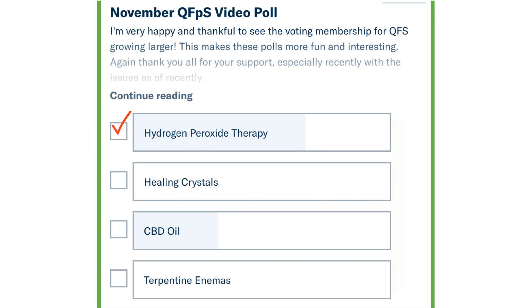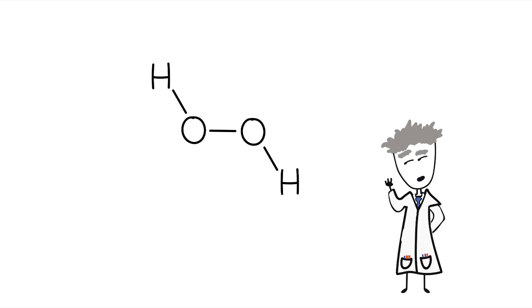This video was voted for by patrons of Questions for Science. Hydrogen peroxide is the simplest peroxide molecule found in nature. It's composed of two oxygen atoms bound to each other, called a peroxide group, and one hydrogen atom bound to both oxygen atoms. So get it? Hydrogen peroxide.